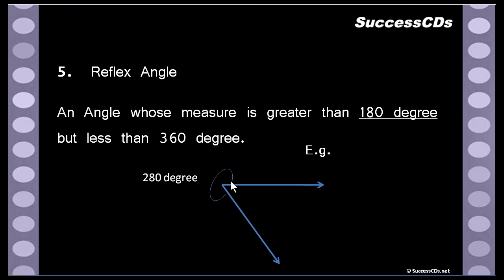What we are looking at is the other angle — the greater angle made between the two arms, that is the outer angle. This angle is known as a reflex angle. This is greater than 180 but less than 360 — it is somewhere around 280 degrees. Therefore, this is a reflex angle.